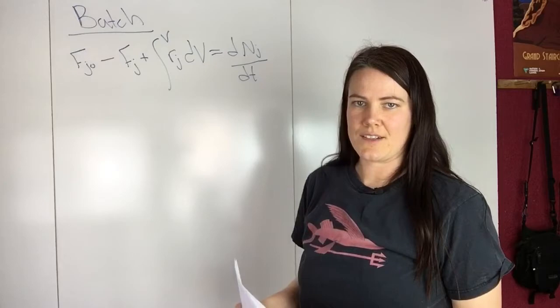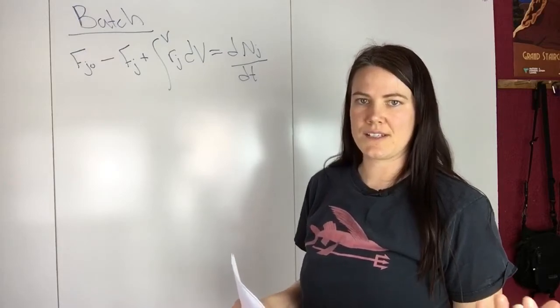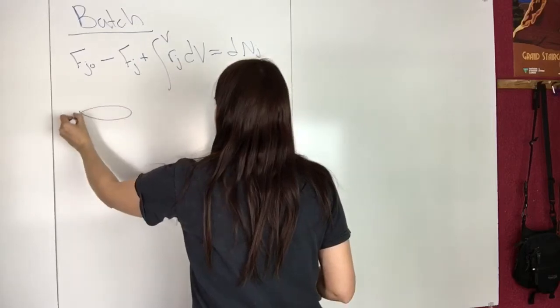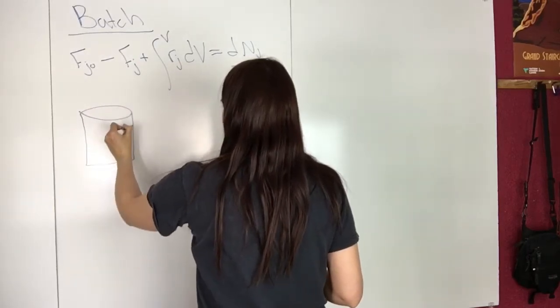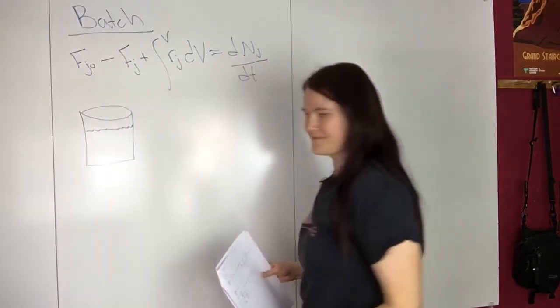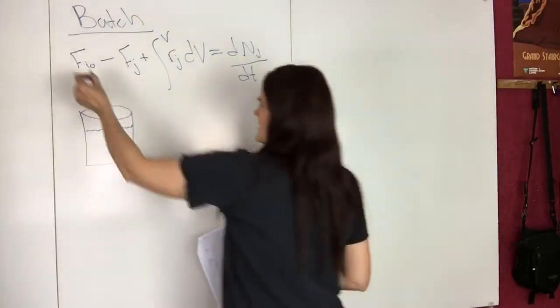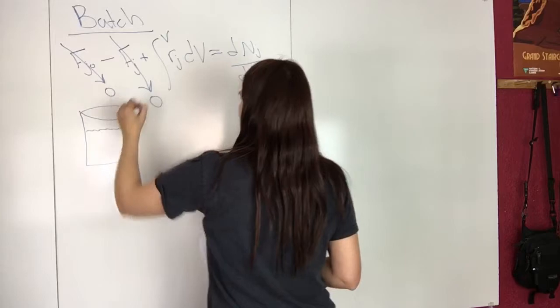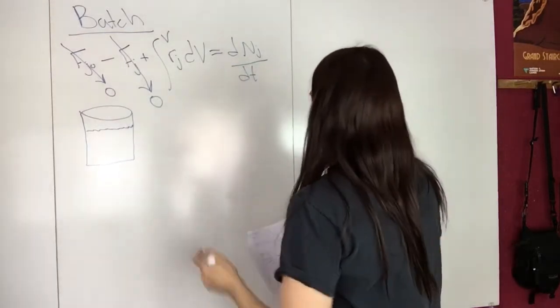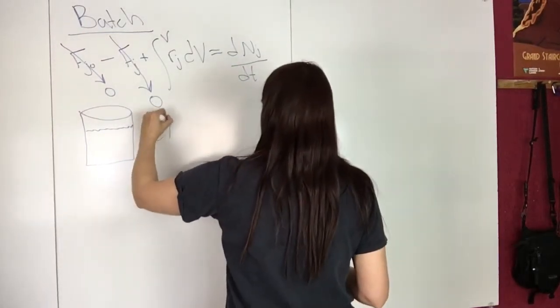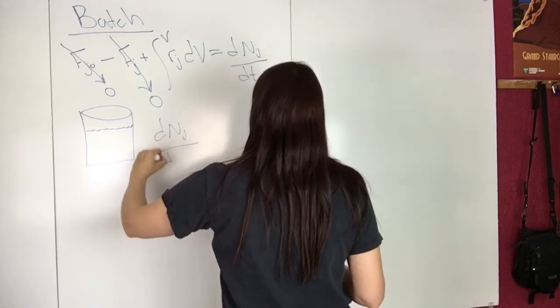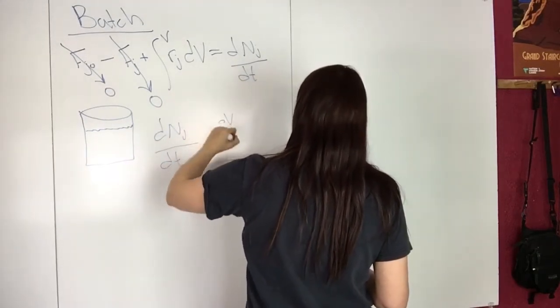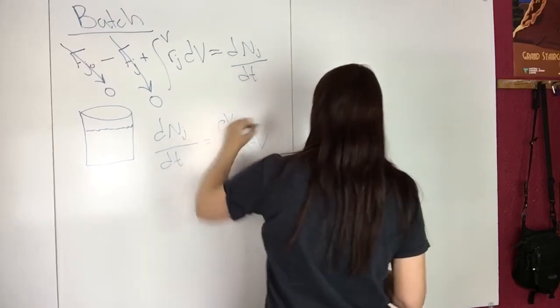If you think about a batch reactor, you know that there's nothing flowing in or out. You just have this. So right away you can see that this term is zero and this term is zero. So you're left with dNJ/dt equals the integral of RJ dV.